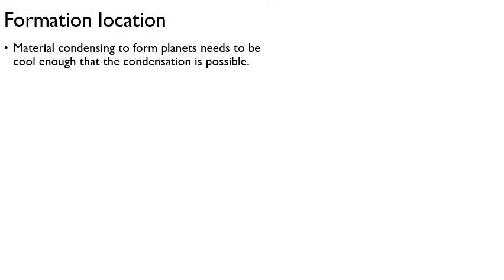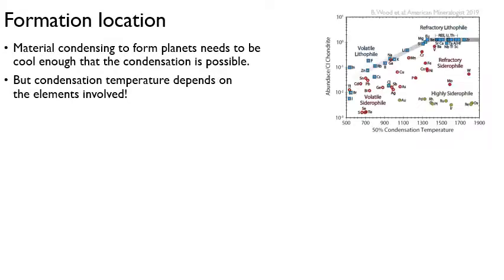Now, as far as where the planets are located, where they're formed, that depends on the properties of the planetary material. So the material that's condensing to form a planet, it needs to be cool enough that condensation is actually possible. You need to allow the material to condense into a solid object. But the condensation temperatures, this is going to depend on the elements that are involved. So this plot here is showing the abundance of some elements in a meteorite on Earth versus the condensation temperature.